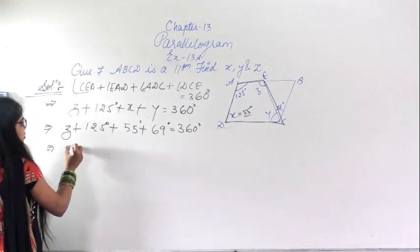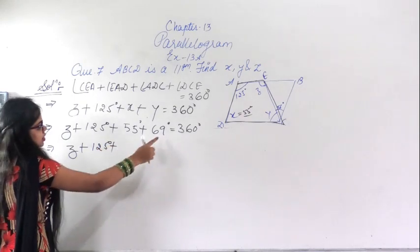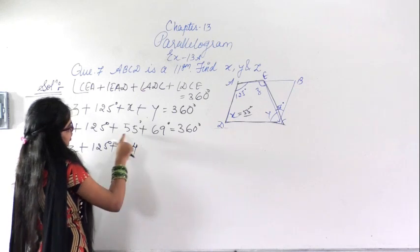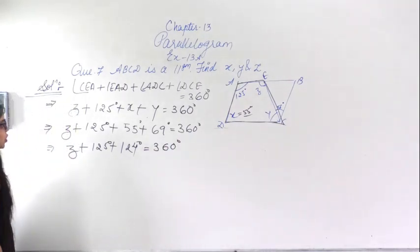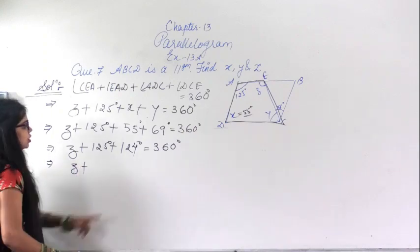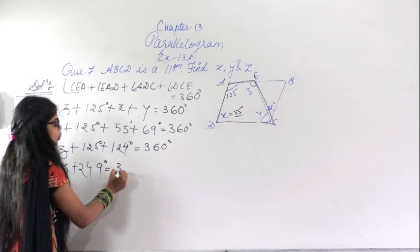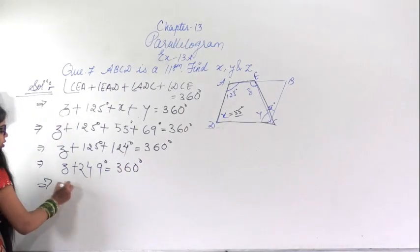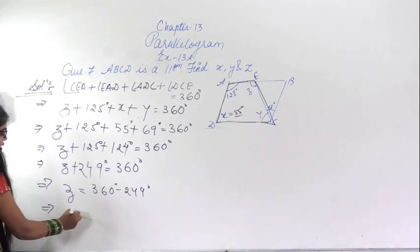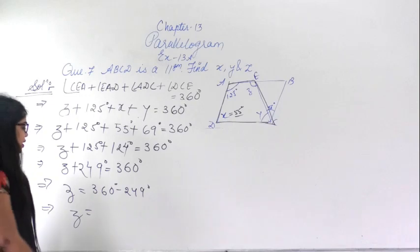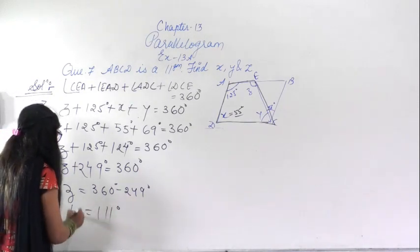From here we have to find the value of z. So z plus 125 plus 55 plus 69 degrees equals 360 degrees. That gives z plus 249 degrees equals 360 degrees. Therefore z equals 360 minus 249, which is 101 degrees.